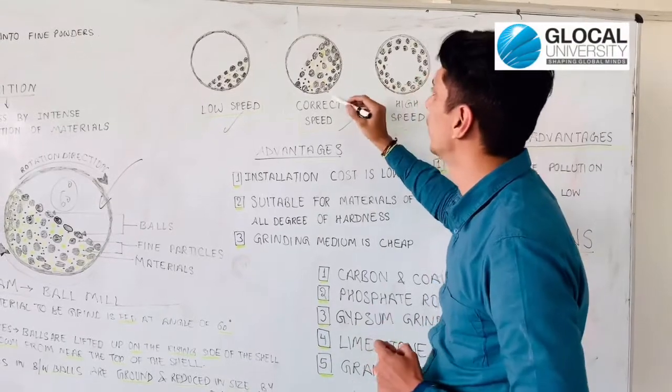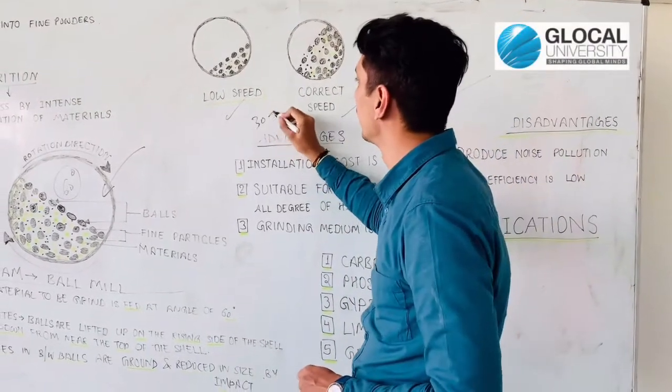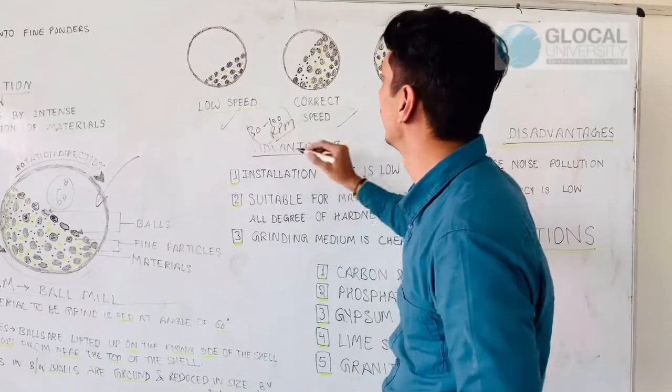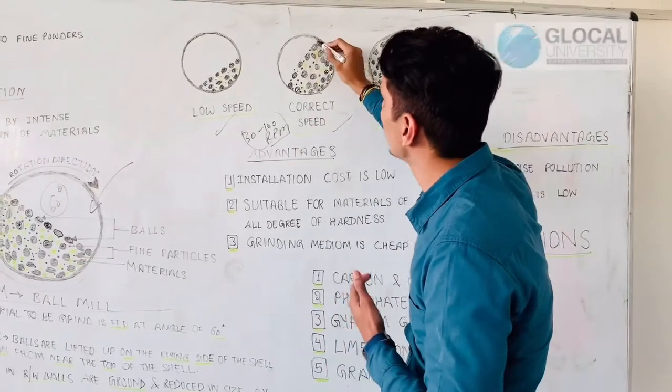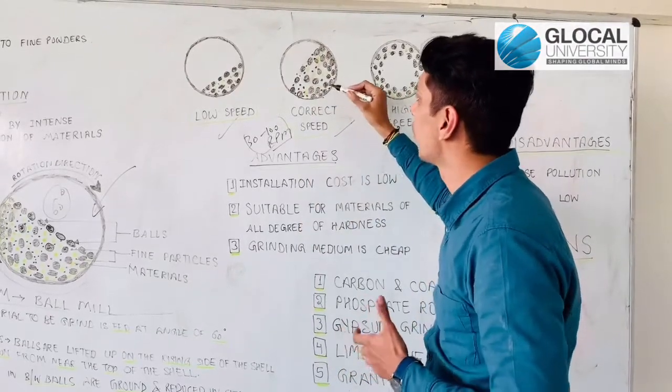Next is correct speed. The speed should be correct, about 30 to 100 RPM. At this speed, the ball will reach the top of the vessel and then fall at 60 degrees. So the size reduction process will occur.